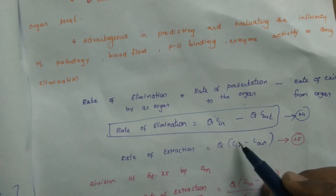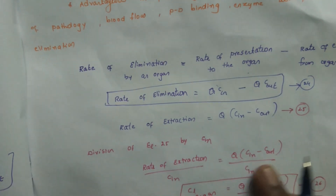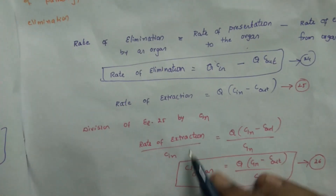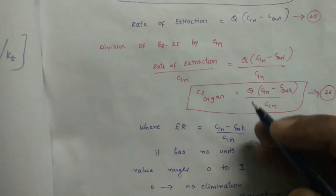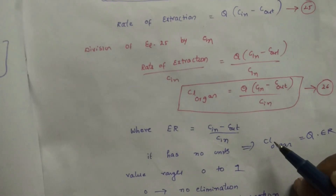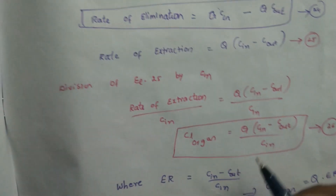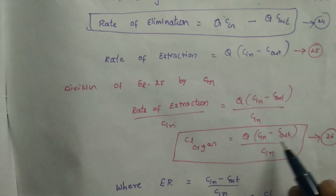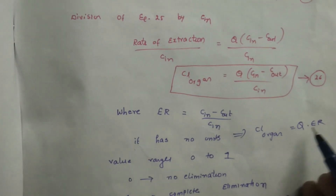Rate of extraction equals Q × (Cin − Cout). Dividing by Cin gives organ clearance: organ clearance equals Q × (Cin − Cout) / Cin. The extraction ratio (ER) is defined as ER = (Cin − Cout) / Cin, which is dimensionless. Therefore, organ clearance equals Q × ER.